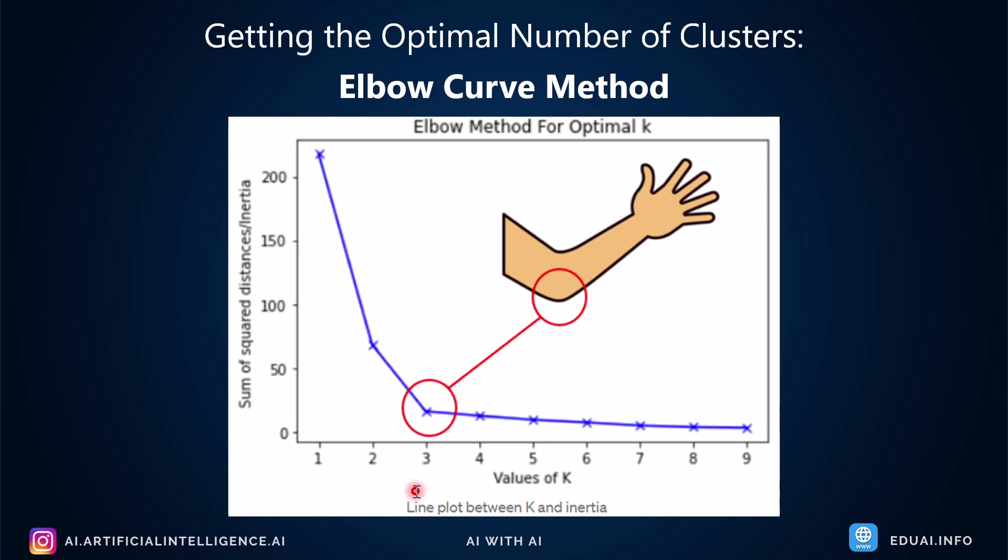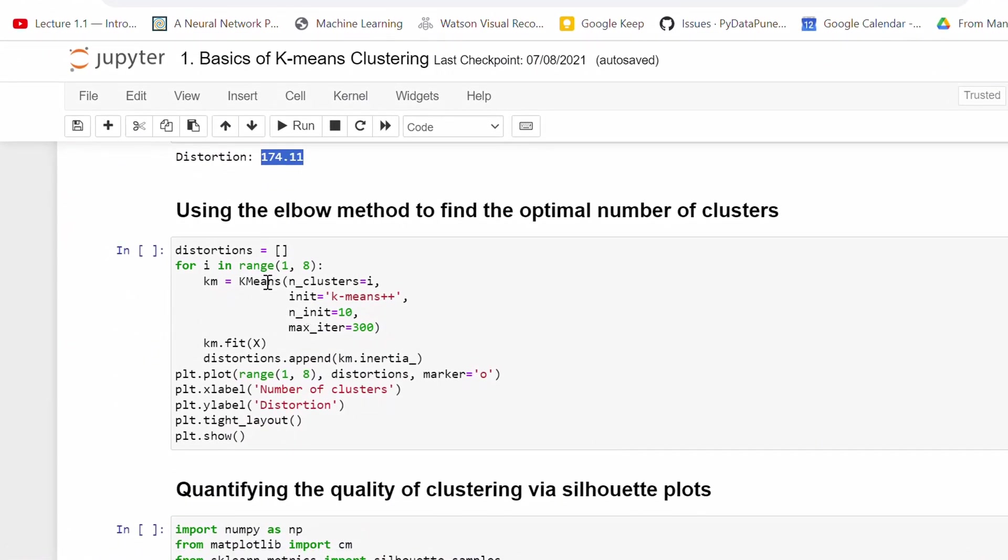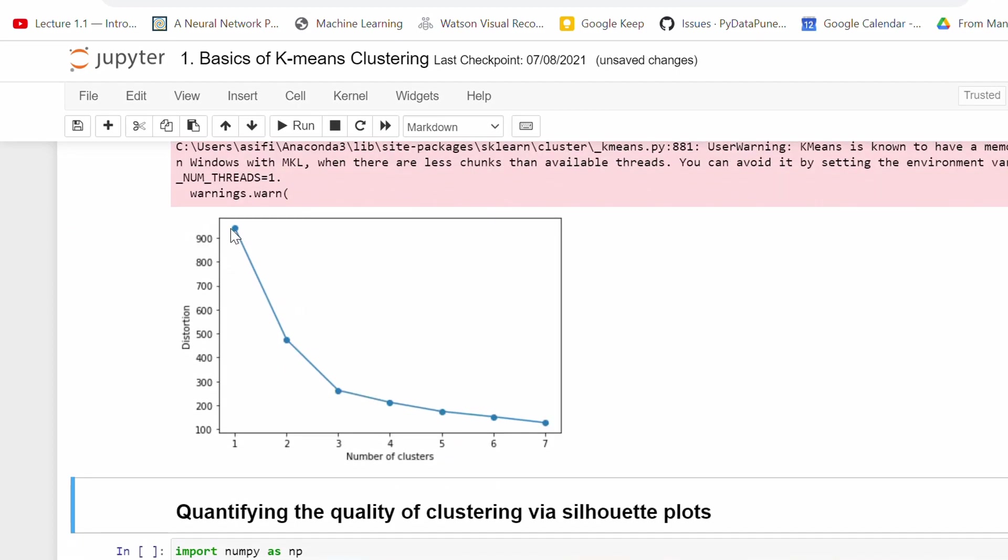And this is when you find the elbow, and that elbow shows the optimal value of clusters, which is 3 here. Same thing we did in the demo. We are using k-means clustering and plotting the data using matplotlib against distortion and number of values, that is K. If you see, the value of K is 1 to 8 and distortion is the output we received. Let's see how the output looks like. Do you see a plot looks like this? This is not an exact elbow, it's a bit of a curve, but I can easily identify the elbow, which is again coming at value 3. So 3 is the optimal number of clusters.